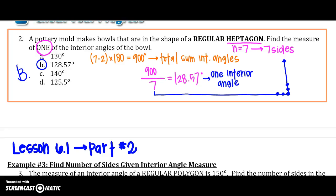Alright, 6.1 part 2 coming at you right now. Remember we had talked about the interior angle measures and just as a reminder to find the total interior angle measures, it's n minus 2, the number of sides minus 2 times 180 degrees.